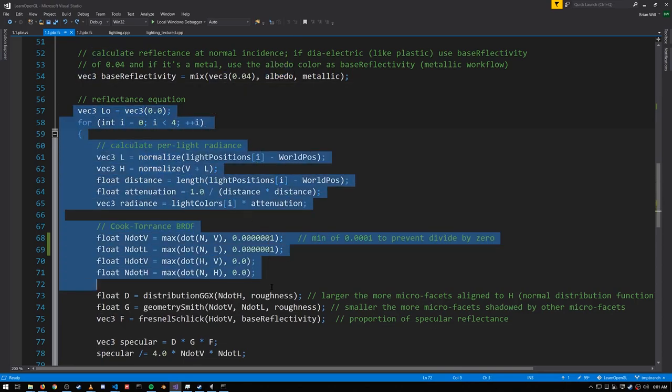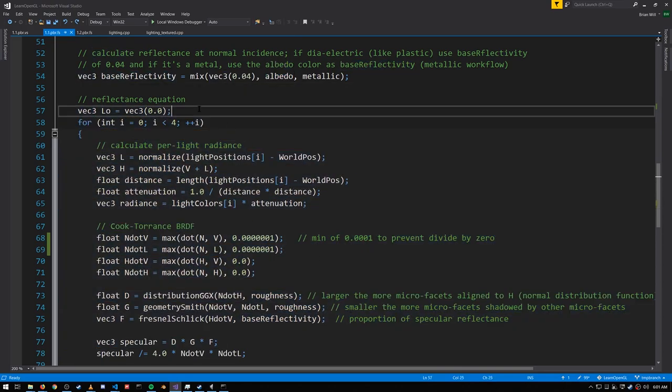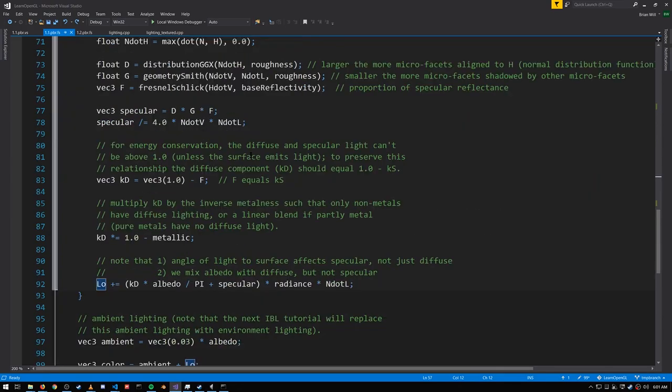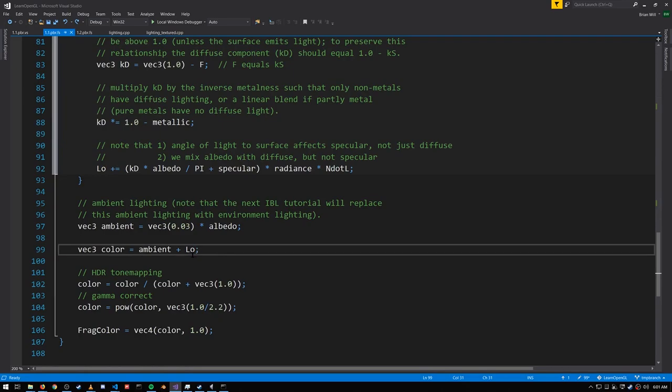This loop is where we're doing the calculation for each of the four lights. We accumulate the output luminance in this variable LO. And we'll come back to this loop, but looking past it first, having computed LO, we simply add it to our ambient light, computed right here, to get our color. Then we do our tone mapping, gamma correction, and that's our output color.